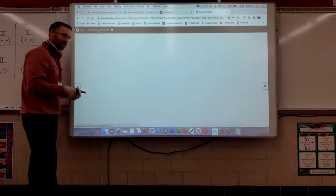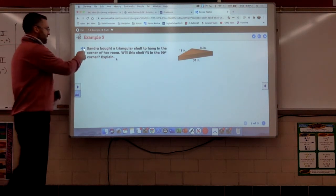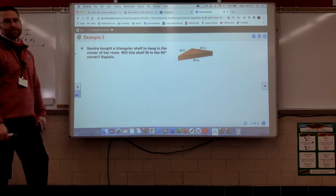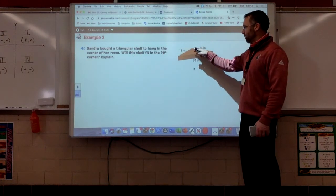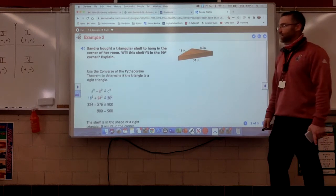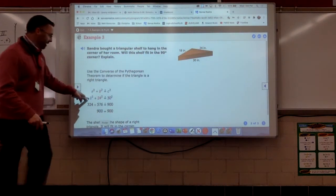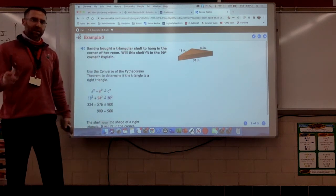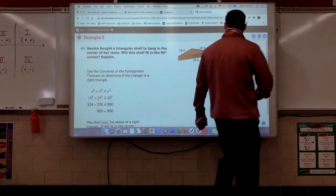All right. We're going to go to example three. Trust me. You're going to do enough examples like that previous one. It's just more Pythagorean theorem, folks. But all it is is using the Pythagorean theorem. All right. Here we go. Example three. Sandra bought a triangular shelf to hang in the corner of her room. Will this shelf fit in the 90-degree corner? I don't know. Explain. Well, what do we need to do? Basically, if it creates a 90-degree angle, then that means A squared plus B squared would equal C squared. So, if we look at their work, it says use the converse to determine if it's a right triangle. If it's a right triangle, A squared plus B squared equals C squared. So, they squared A and B. They added them together. They got 900. They squared C. They got 900. Will that thing fit in the corner of the shelf? Yes. Because A squared plus B squared equals C squared, which means it's a right triangle. That was easy.